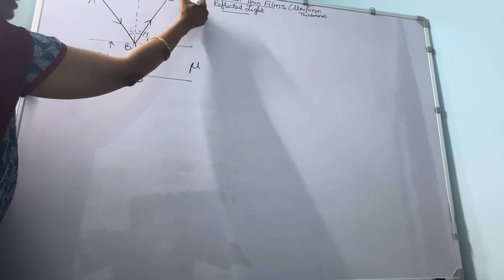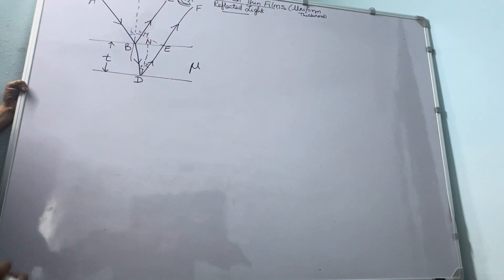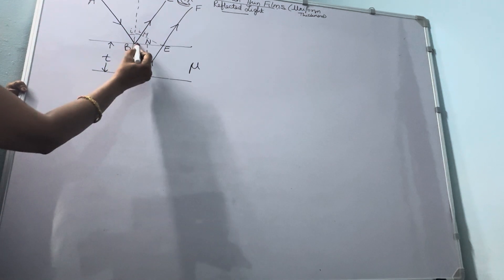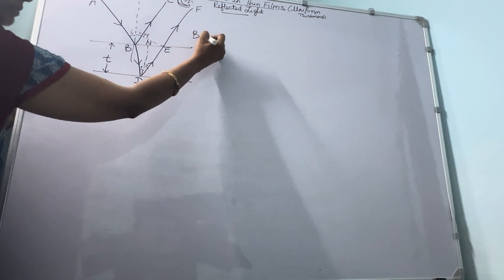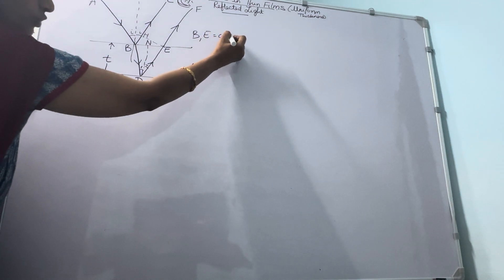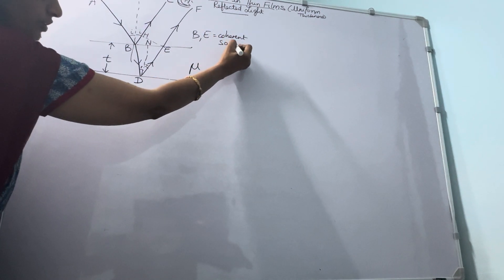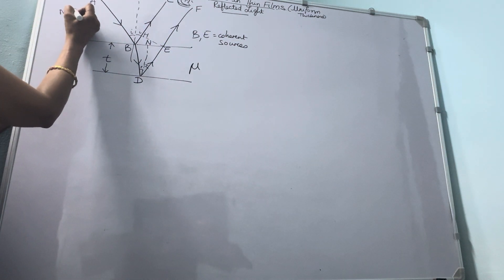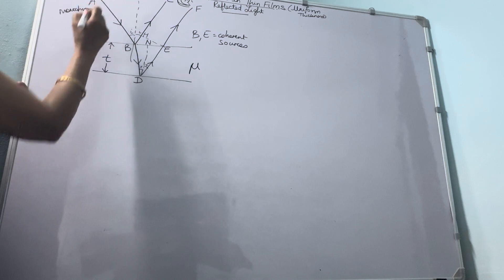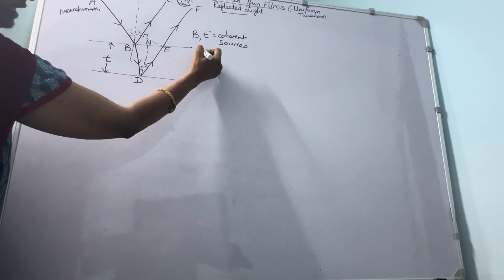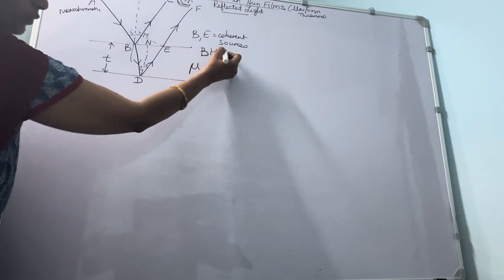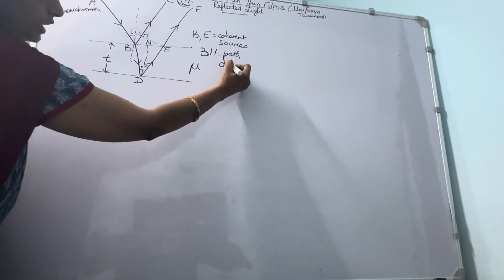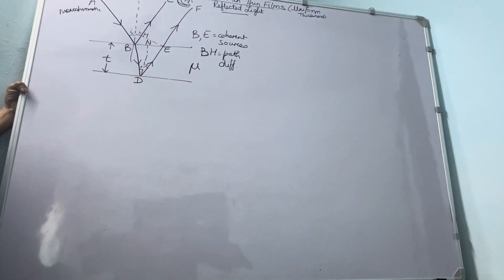If our eye is here, we will see fringes here. B and E are the coherent sources, which are the necessary conditions for interference of light to occur. A is my monochromatic source of light. And this BH is my path difference which I am going to find out so that I can find the maxima and minima of my fringe pattern.